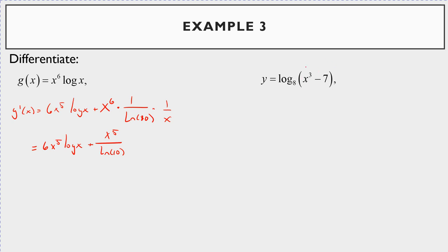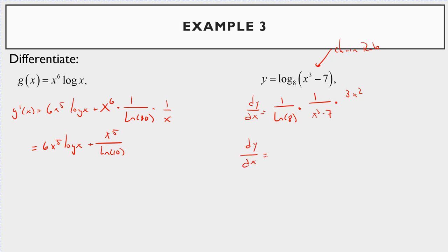For y = log_8(x³ − 7), there's something inside the log, so use the chain rule. dy/dx = 1/ln(8) · 1/(x³ − 7) · (derivative of the inside). The derivative of x³ − 7 is 3x². So dy/dx = 3x² / (ln(8)·(x³ − 7)).